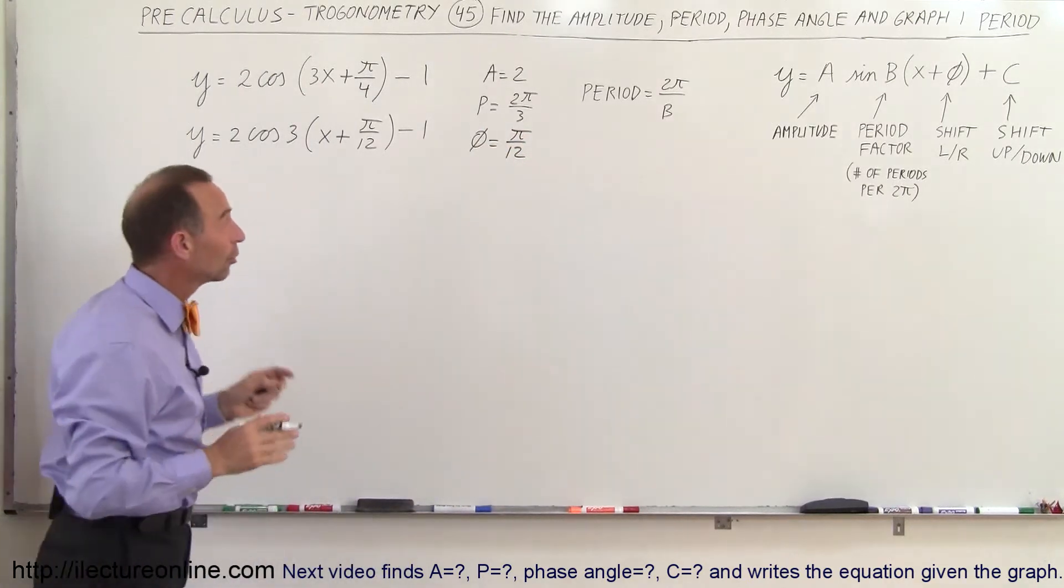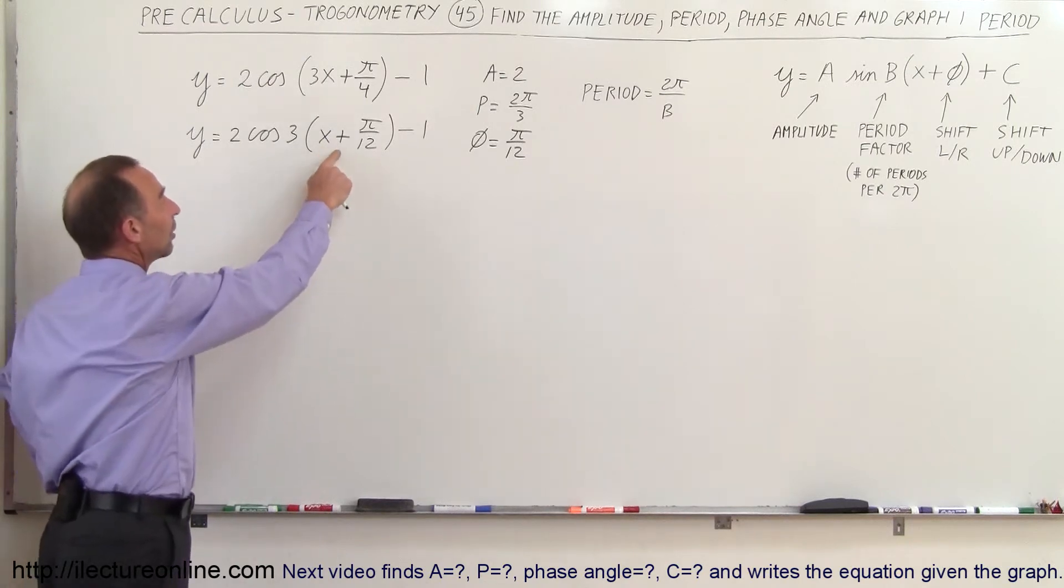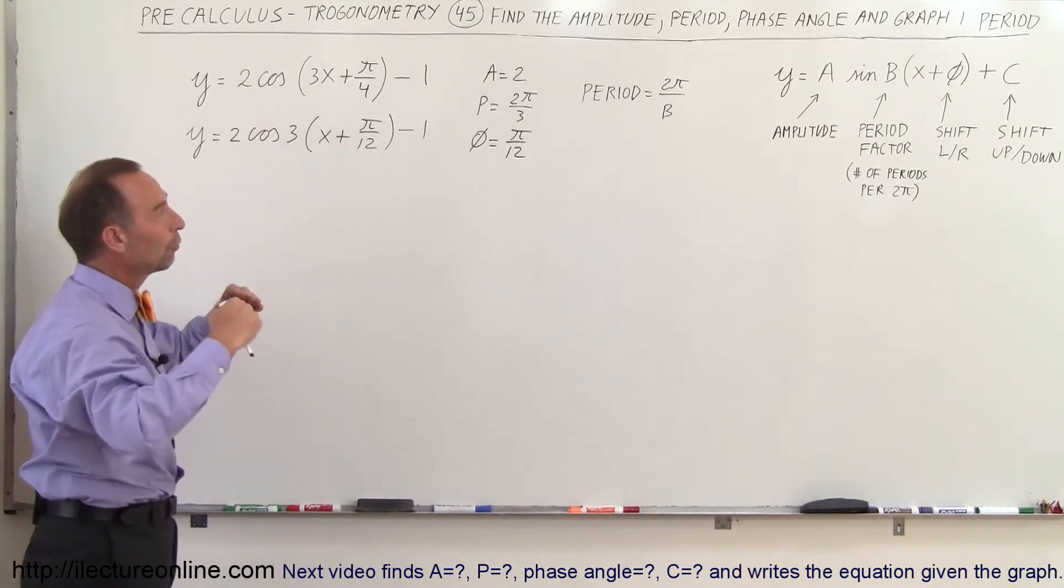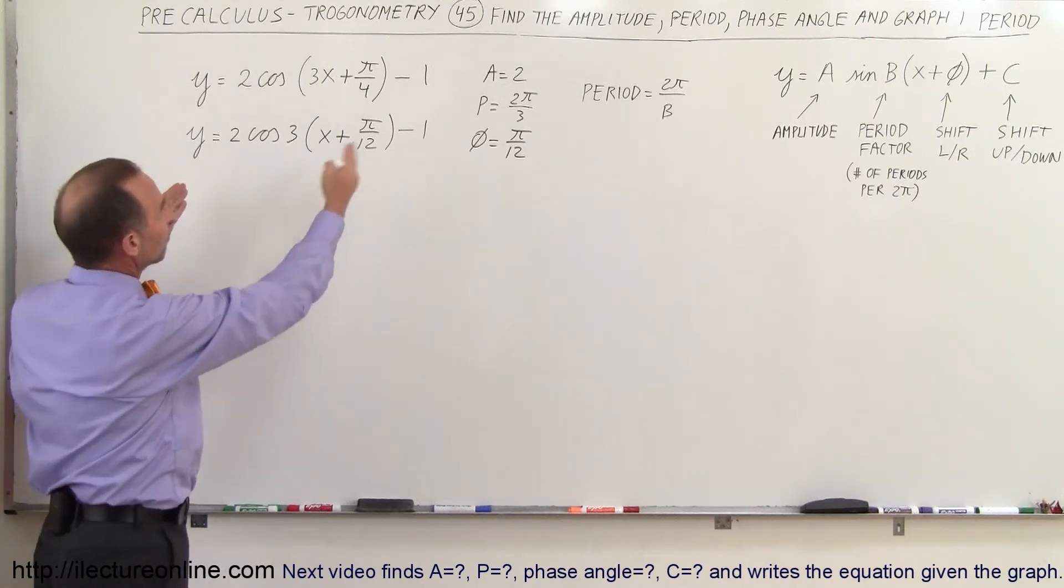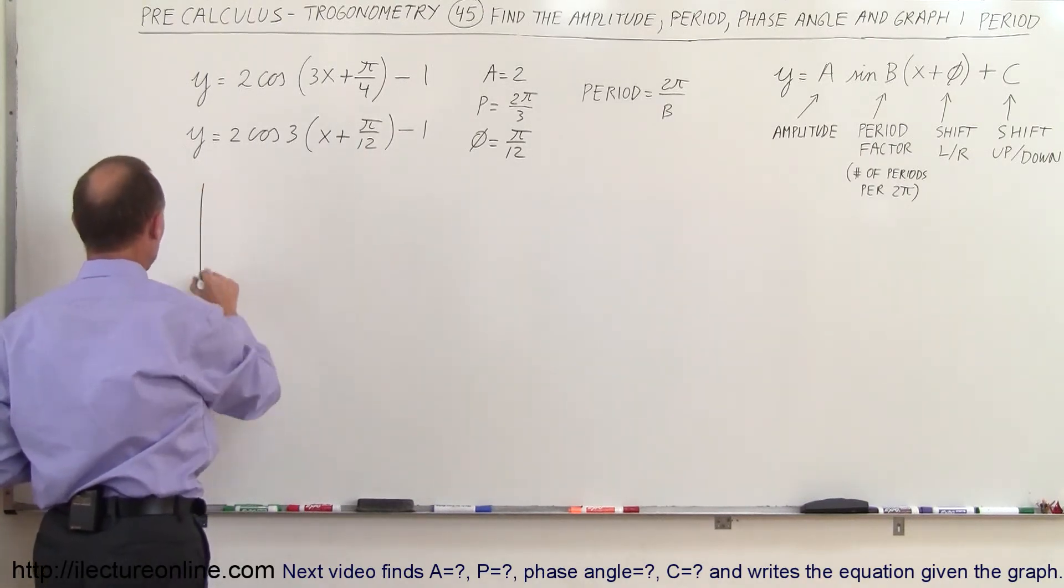Now in this case the whole function will be shifted to the left because it's plus π over 12 and of course the whole function is also shifted downward by 1 because it's the whole function minus 1. All right so what that then looks like is as follows.